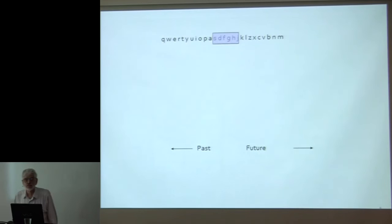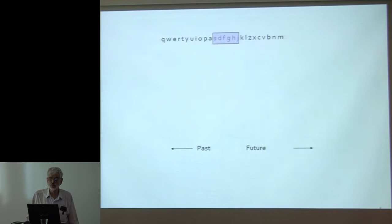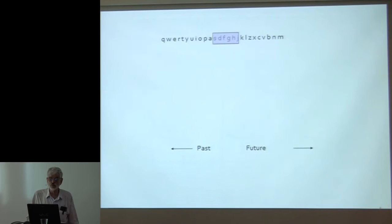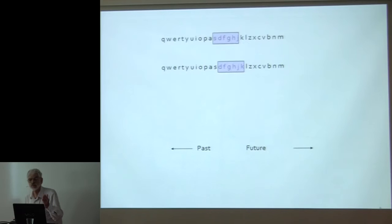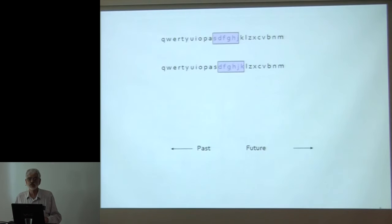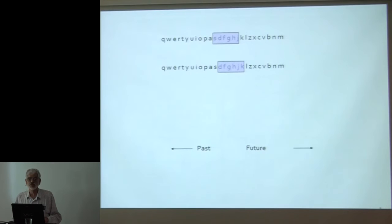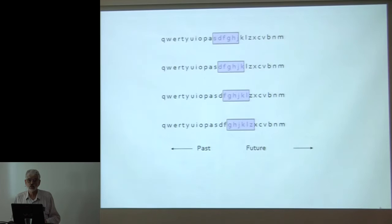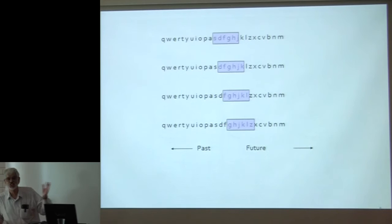Here's a stream coming in. The window size is six — the last six characters. At some time it contains S, D, F, G, H, J. The next element K comes in, the oldest element S falls out of the window, so now the window contains D, F, G, H, J, K. Then the next element L comes in, D falls out, and so on. At any time, the window consists of the last six characters seen.